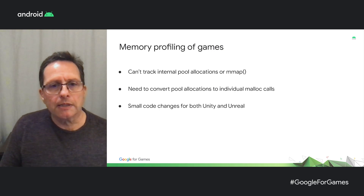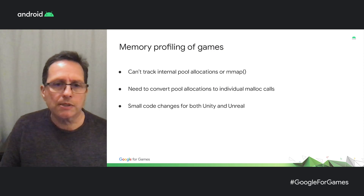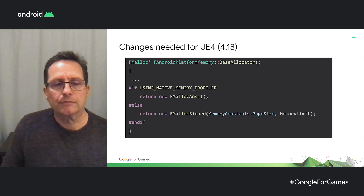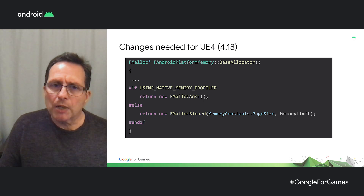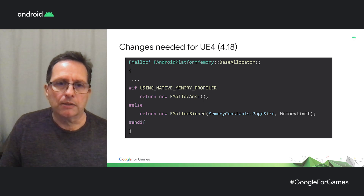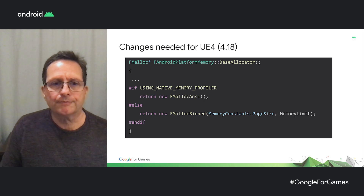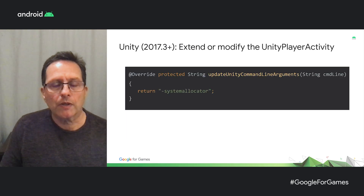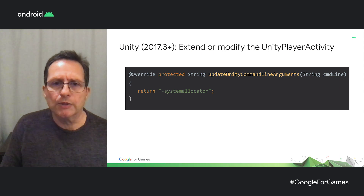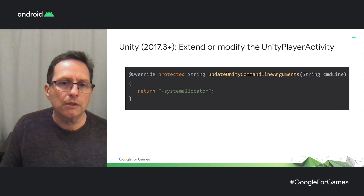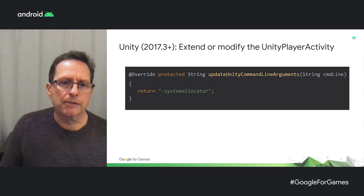This can be done in Unreal and Unity with some minor changes. To make Unreal use the system malloc and free, you need to modify the base allocator method to use FMallocAnsi, as shown here. For Unity, you can extend or modify the Unity player activity to include the system allocator flag in the command line arguments.